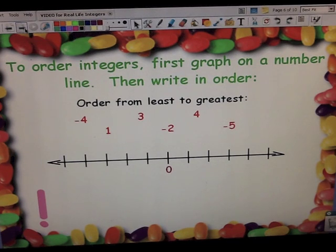The easiest way to order integers, positive and negative numbers, is to draw a number line. And then we can put them in order. So here's our number line and here are our integers. Take negative 4. We're going to start at 0. Because this is a negative number, I know that it's going to be less than 0 or to the left of 0.